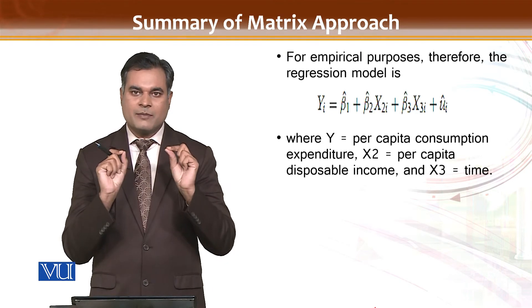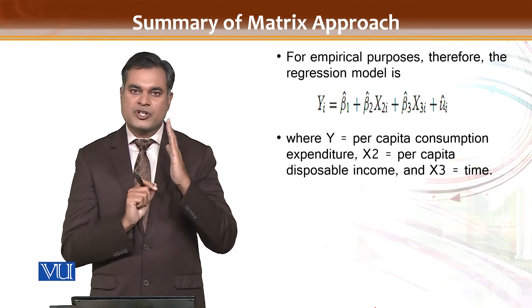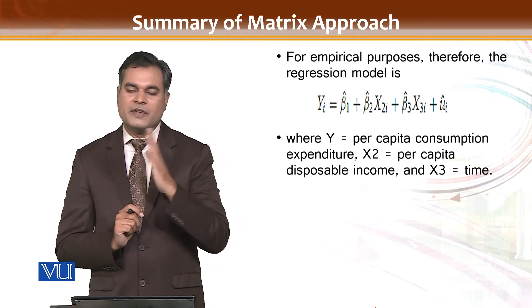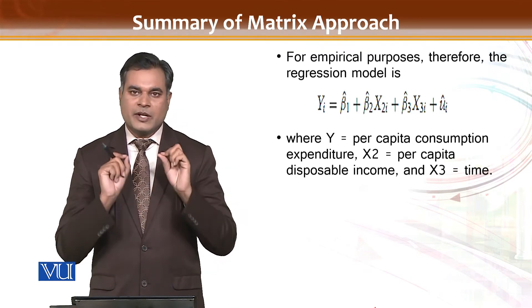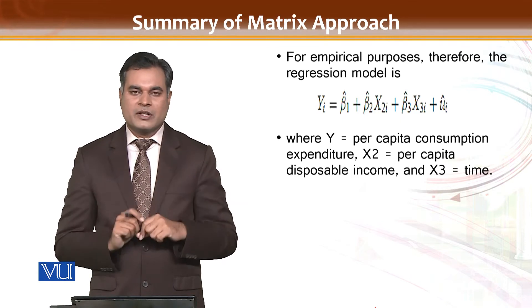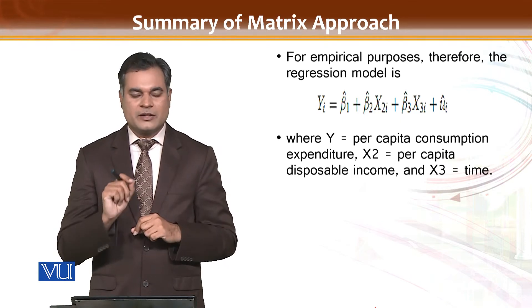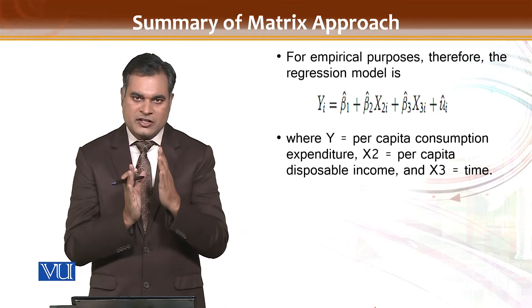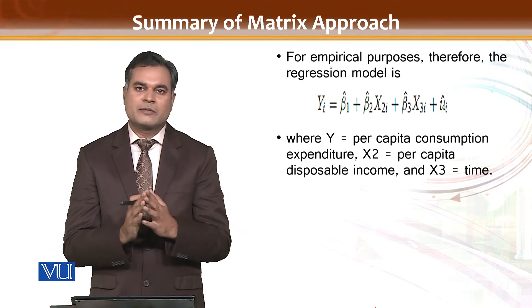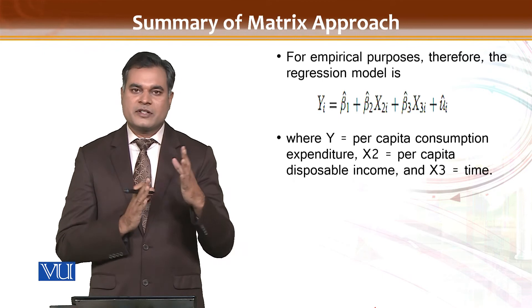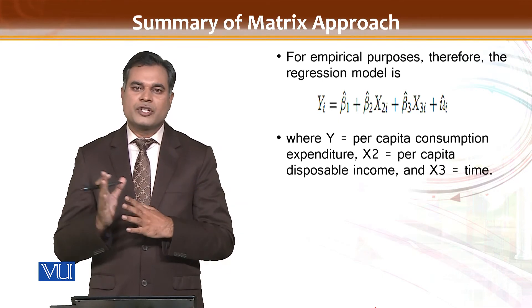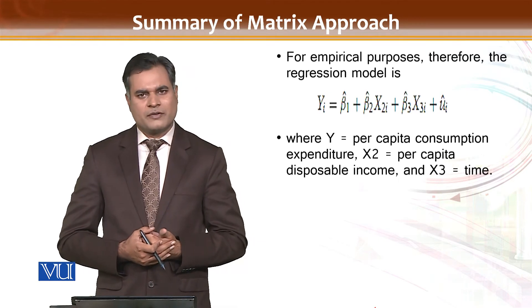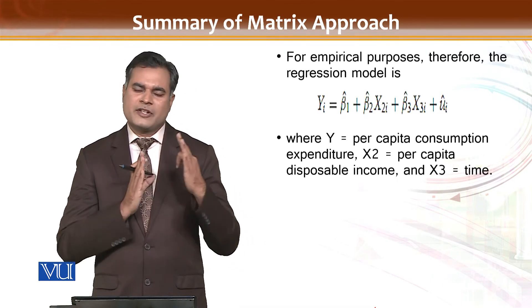The concept and explanation of R-squared remains the same whether you are explaining the two-variable or three-variable case. If R-squared is 0.7, it means 70% of changes in the dependent variable are explained by the model and 30% are not explained. This explanation holds for the four-variable case as well.